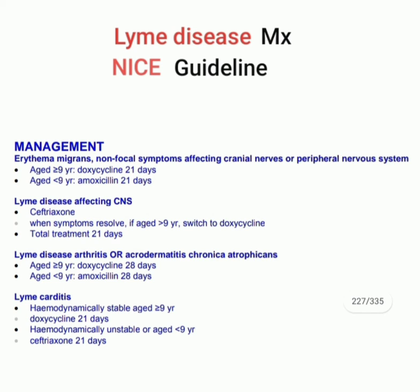Third: if Lyme disease presents with arthritis or acrodermatitis chronica atrophicans — age nine years or more: doxycycline 28 days; age less than nine years: amoxicillin 28 days. Remember dear doctors, only Lyme disease with arthritis or acrodermatitis chronica atrophicans has a treatment duration of 28 days. All other cases are 21 days.